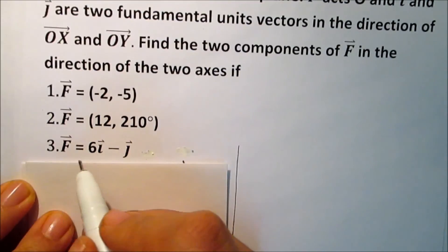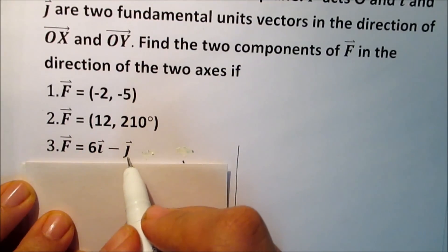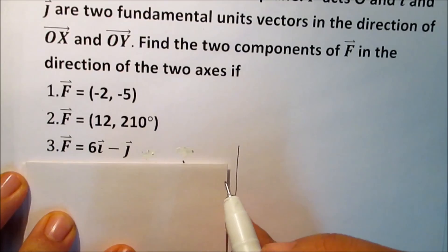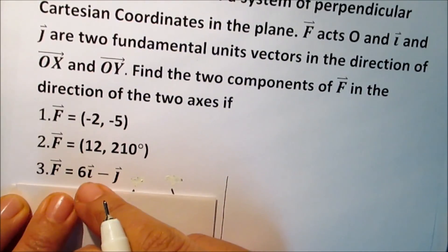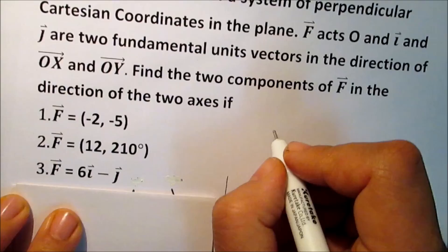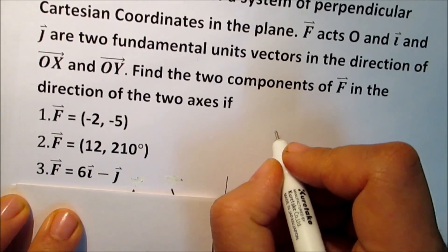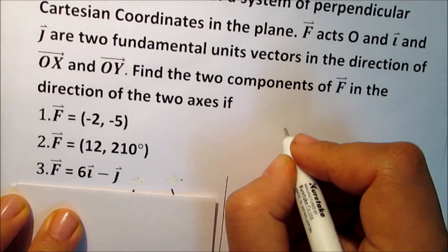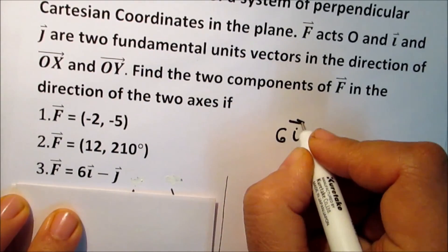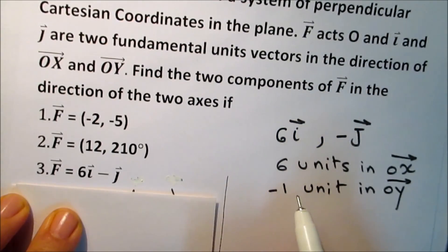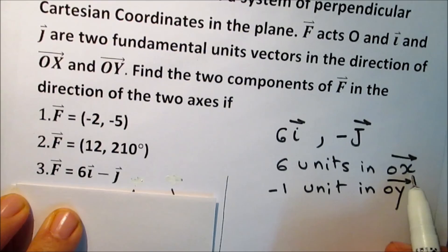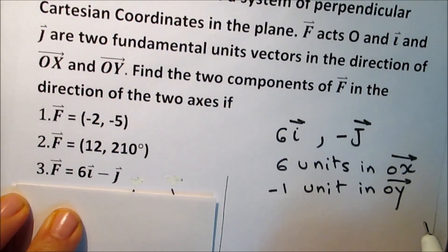Finally, if F equals 6i minus j, the two components of the force are 6i and negative j. So the two components are 6 units in the direction of OX and negative 1 unit in the direction of OY.